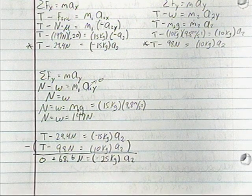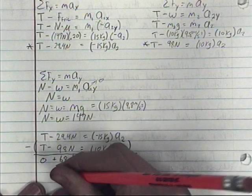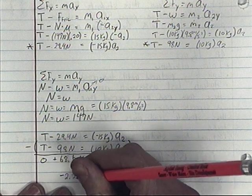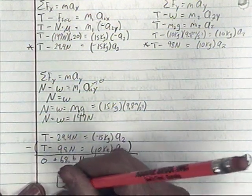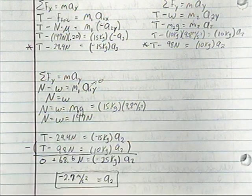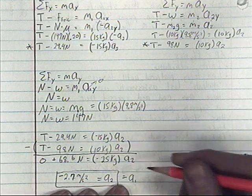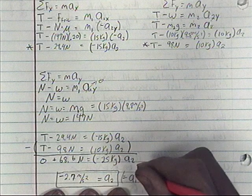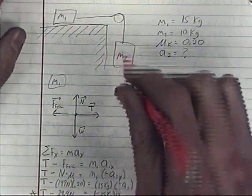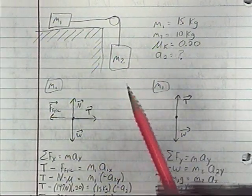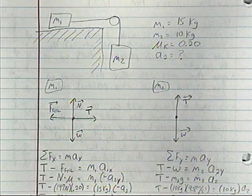Dividing both sides by negative 25, we get a2 equals negative 2.7 meters per second squared. Since m1 and m2 are connected, that's also the magnitude of a1 — just in the opposite direction. So m2 accelerates downward at 2.7 m/s² while m1 accelerates to the right at the same rate.